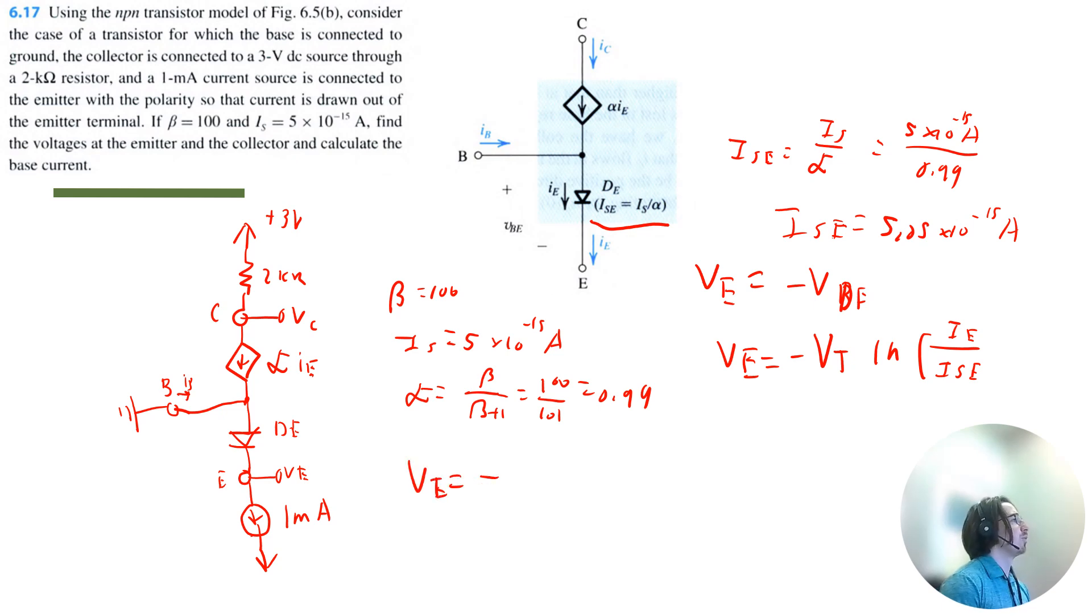So the thermal voltage will be negative 0.025 volts times the natural log of the emitter current divided by 5.05 times 10 to the negative 15 amps. So I get the emitter voltage is negative 0.65 volts.